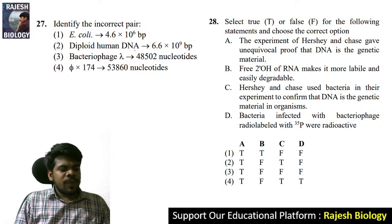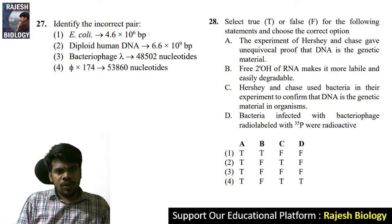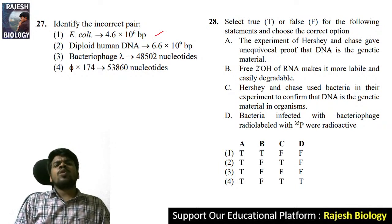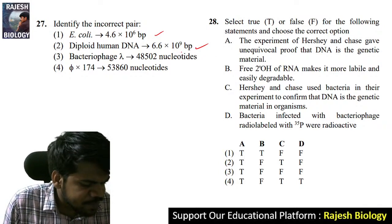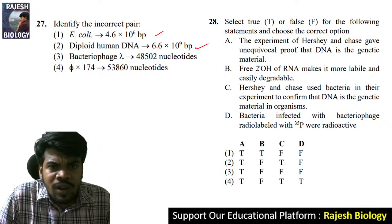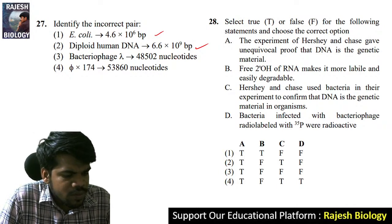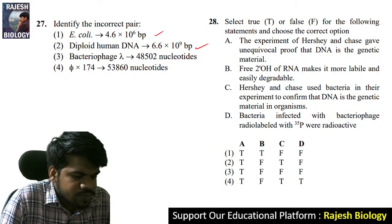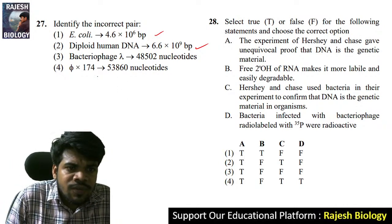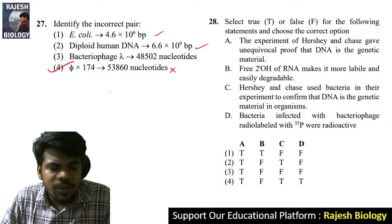Question 27: identify the incorrect pair. E. coli DNA equals 4.6 × 10⁶ base pairs — correct. Diploid human DNA equals 6.6 × 10⁹ base pairs — also right. The right answer is option four because it is wrong. Dinesh, correct.